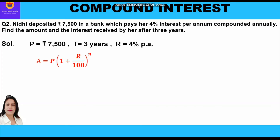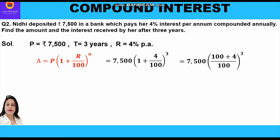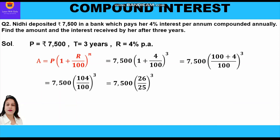We apply the formula: A = P(1 + r/100)^n, substituting the values — 7,500 × (1 + 4/100)^3. Taking LCM, this becomes 7,500 × ((100 + 4)/100)^3.